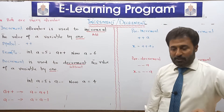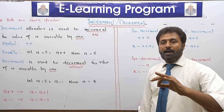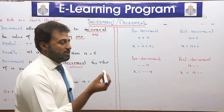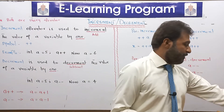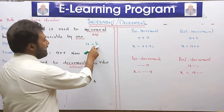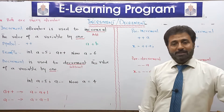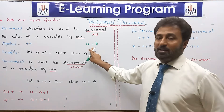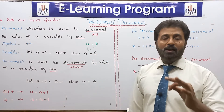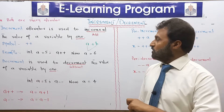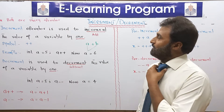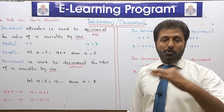Unary operators basically kya hote hain? Humne ek concept padha tha — operator and operand. Jab humne expression discuss kiya tha, humne dekha ki expression ke andar operand bhi hote hain aur operator bhi hote hain. For example, A plus B — A and B are called operands, and the plus symbol is called the operator.